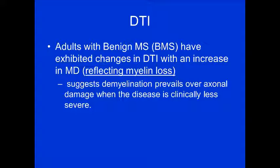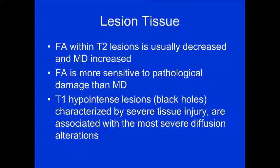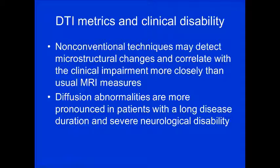MS also affects gray matter — microscopic damage can be detected even in the absence of macroscopic disease. Anatomic changes are visible in deep and cortical gray matter across most MS phenotypes. Adults with benign MS show increased MD in gray matter — reflecting demyelination prevailing over axonal damage when disease is clinically less severe. In the spinal cord, reduction in FA and increase in MD are observed even in patients with normal-appearing white matter, indicating widespread pathology regardless of visible T2 lesions. In lesion tissues, FA decreases and MD increases, with black holes showing the most severe diffusion alterations.